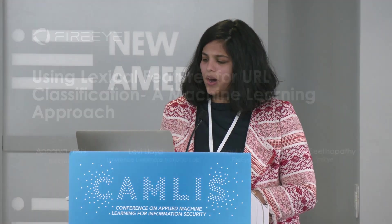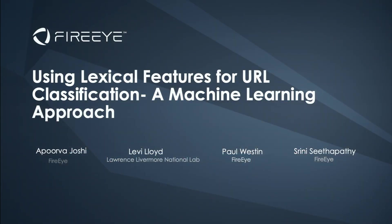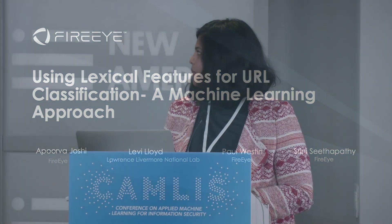Thanks Lauren. I'm Apoorva. I'm a senior research scientist on the cloud detection services team at FireEye. I've been at FireEye for about a year and a half, mainly working on different aspects of our email security product. My research mainly deals with figuring out ways to integrate machine learning into our email product. And today I'm going to talk about a purely lexical feature-based classification approach for detecting malicious URLs that was integrated into our email security product about six months back. It's a fairly simple NLP-based approach, but it works.